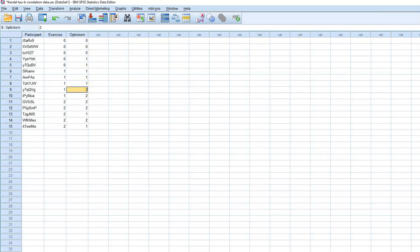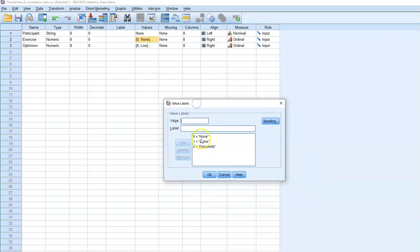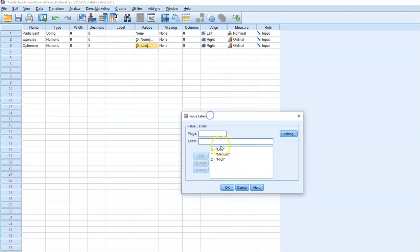If you look at the variable view, you can see there are two measures: exercise and optimism. For exercise, zero shows that they don't exercise, one represents sometimes, and two means frequently. And for optimism, we have three levels: zero for low optimism, one for medium, and two for high.